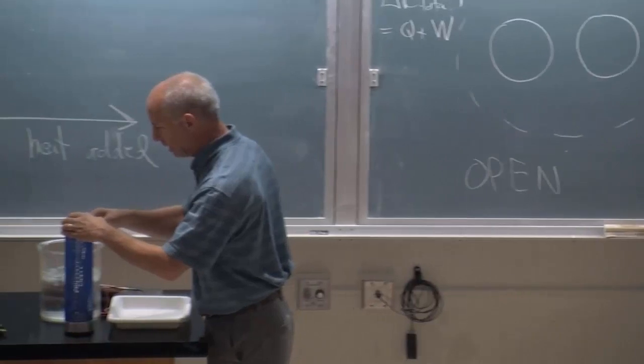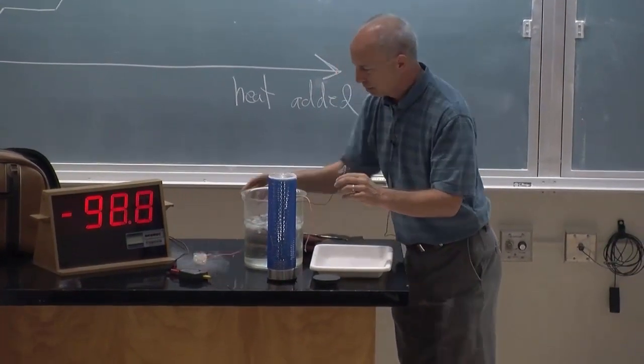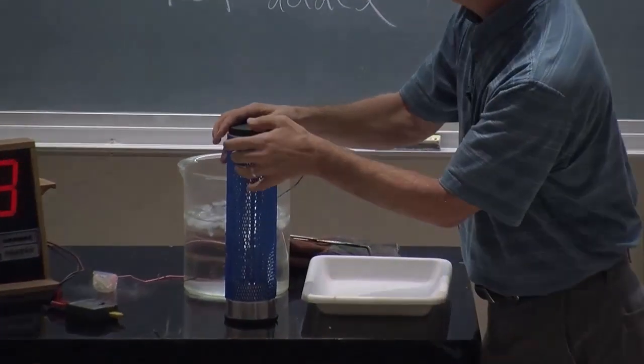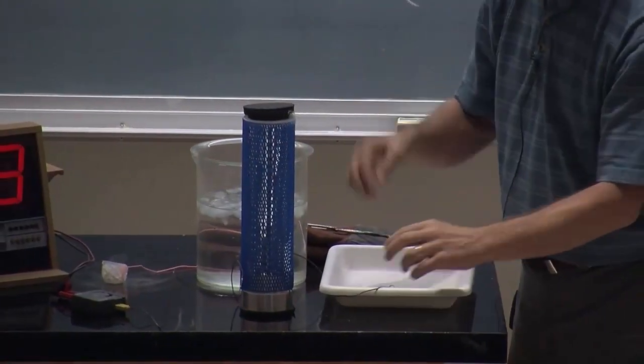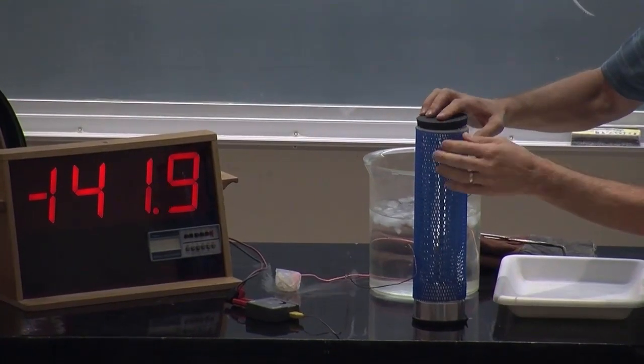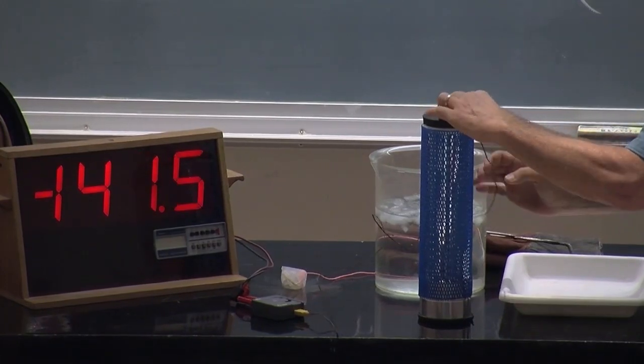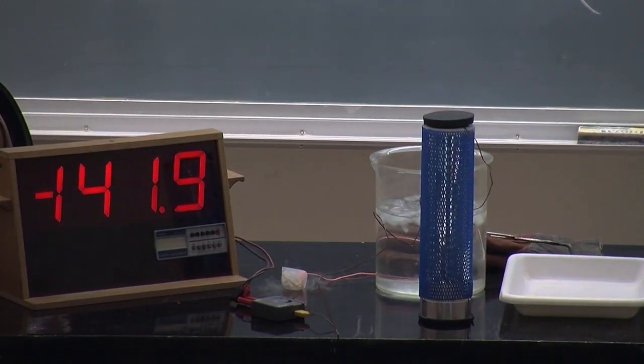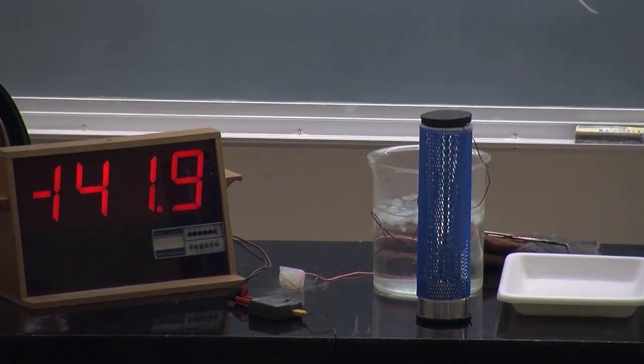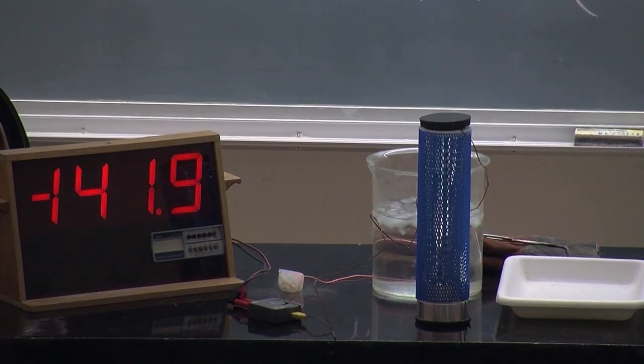So I have an ice cube sitting here. We'll let it warm up a bit. I have liquid nitrogen sitting here. It says it's minus 142 degrees C. So 270. I'm trying to figure out liquid nitrogen.